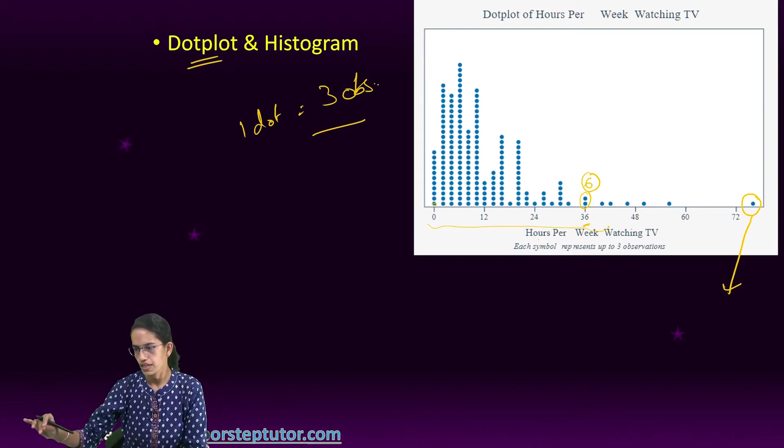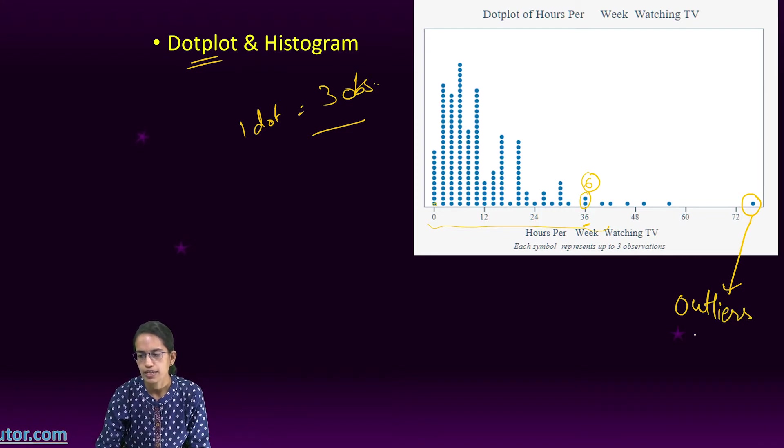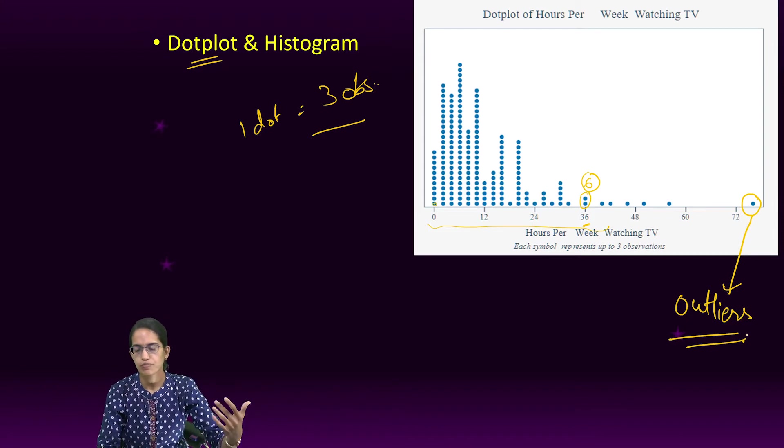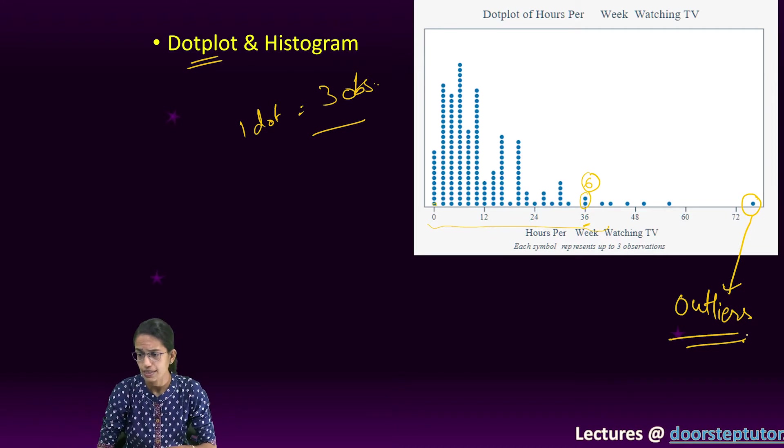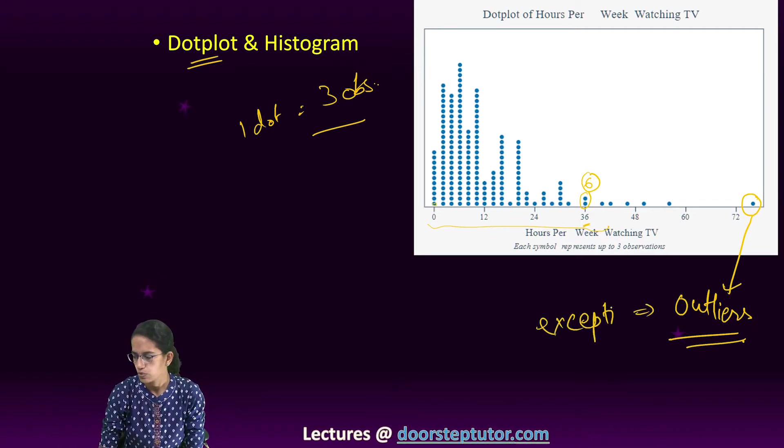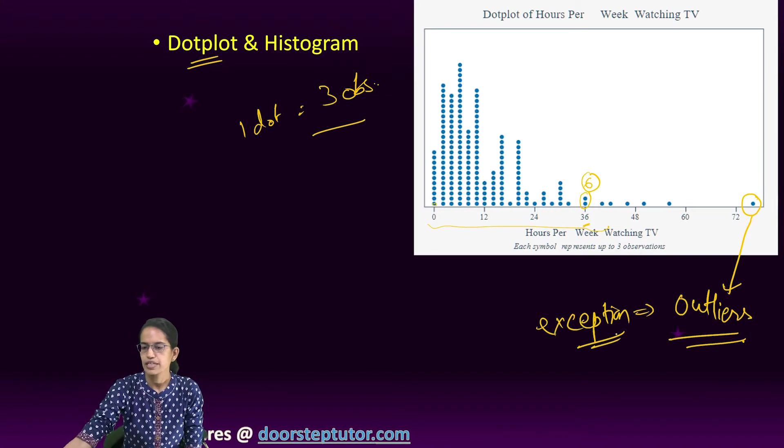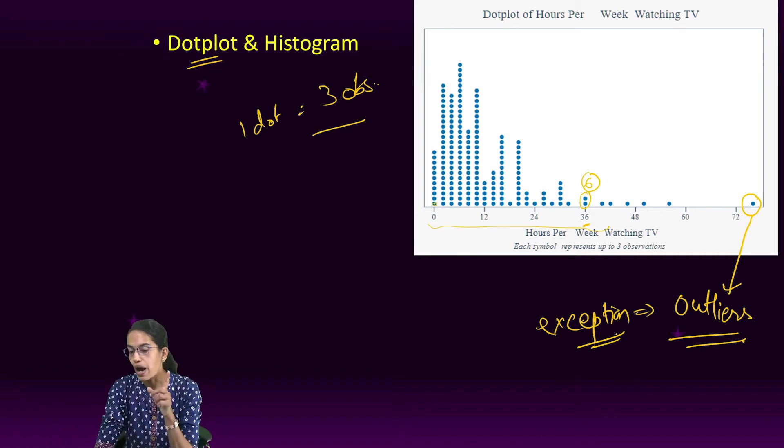When this dot is very far away, we call it an outlier. Whenever we are studying any graph—it could be a dotplot, it could be a histogram—we understand whether there are exceptions, and these exceptions are understood as outliers.